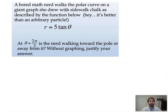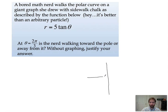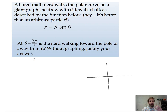Last one in this video: a bored math nerd walks the polar curve on a giant graph drawn with sidewalk chalk, described by r equals five tangent theta. At theta equals two pi over three, is the nerd walking toward the pole or away from it? We need to know two things: where the nerd is, and how they're moving. You can't just say dr/dθ is negative so I'm moving toward the pole — it depends on where you are. Just like moving east depends on whether you're in China or California relative to Japan.